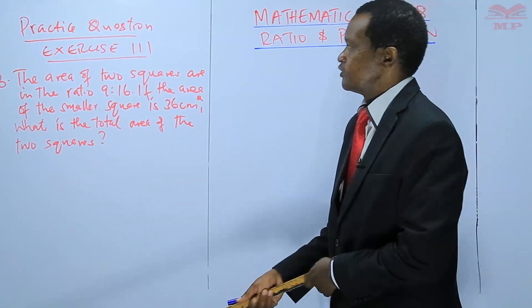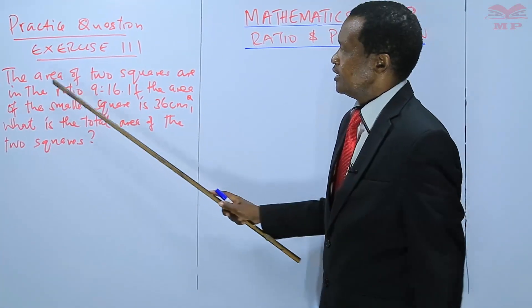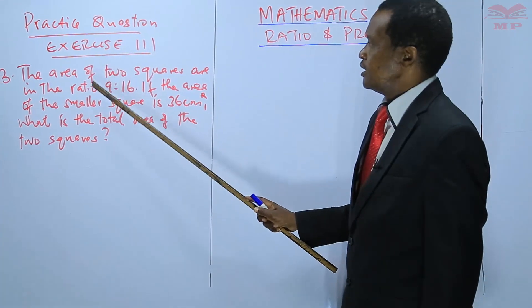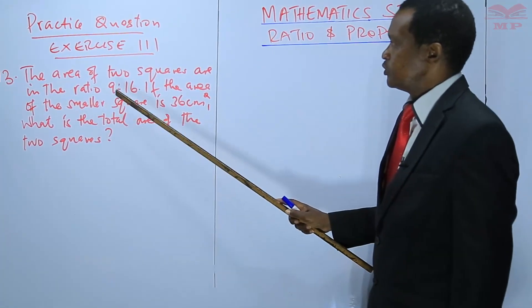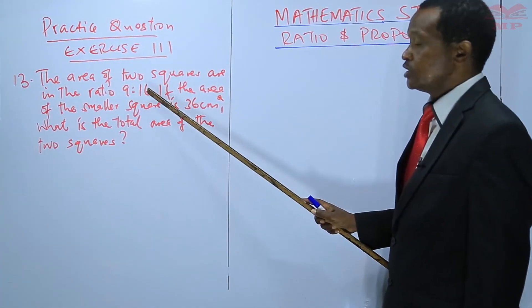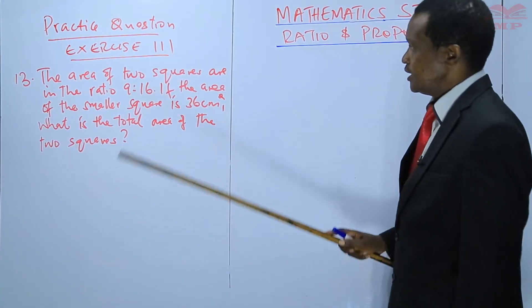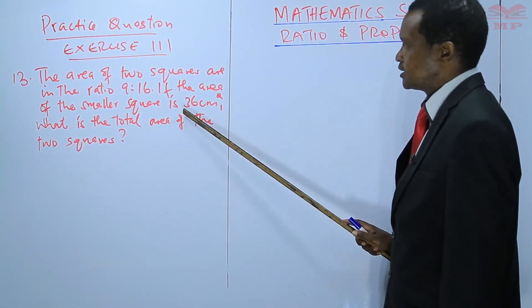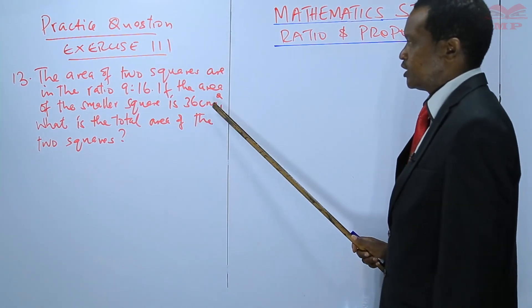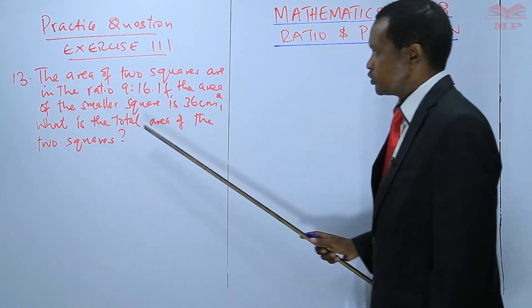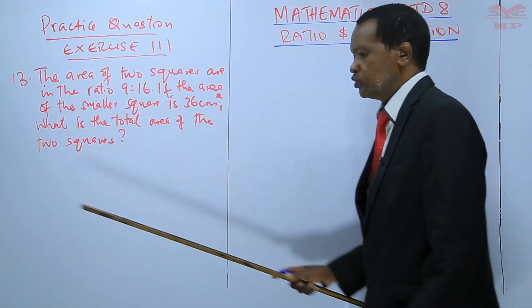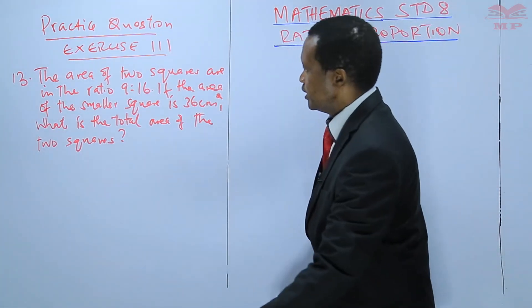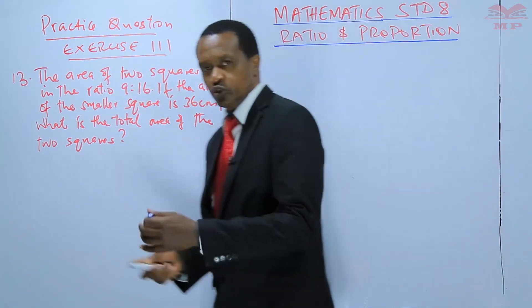The question reads as follows: The area of two squares are in the ratio 9 to 16. If the area of the smaller square is 36 centimeters squared, what is the total area of the two squares?